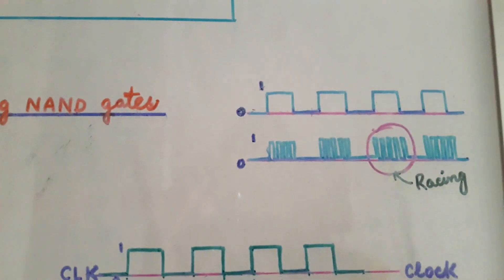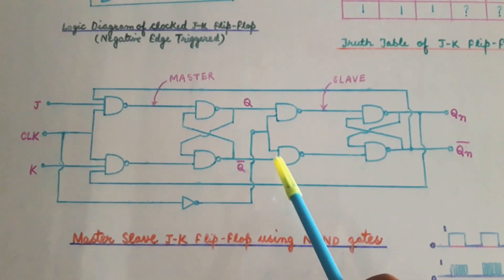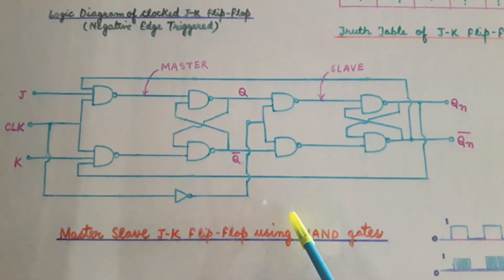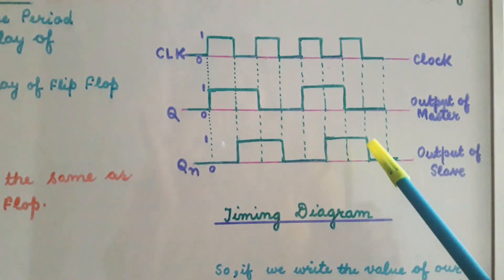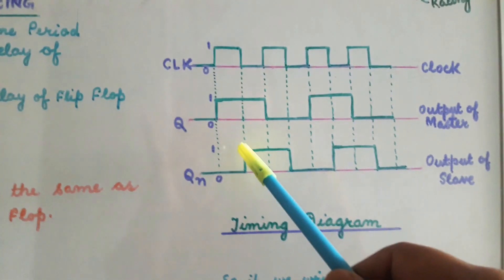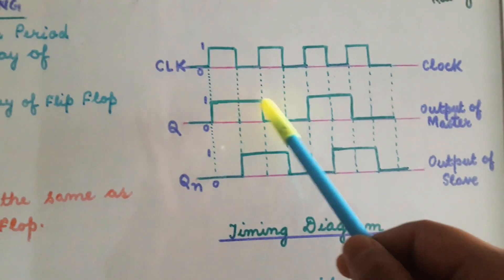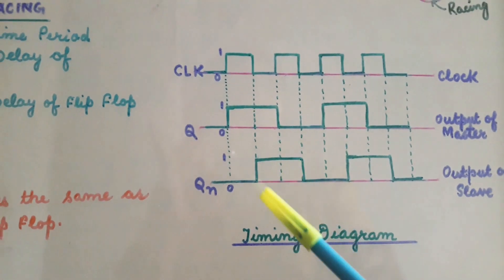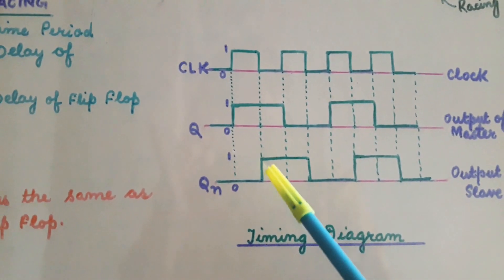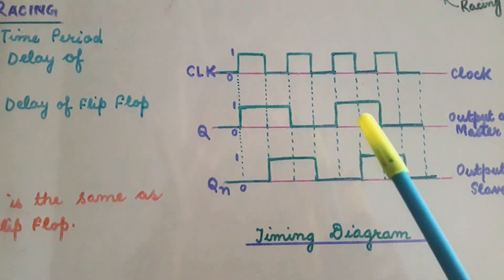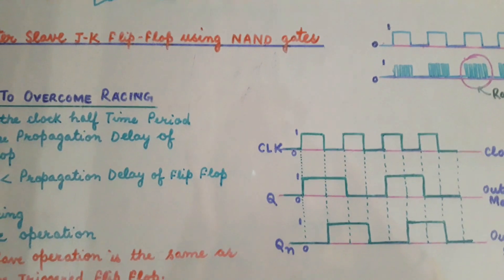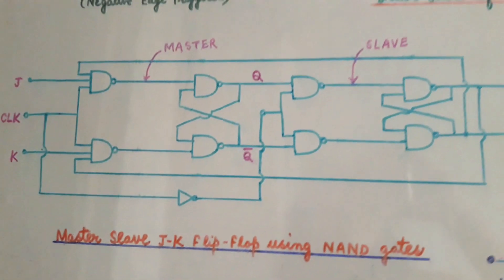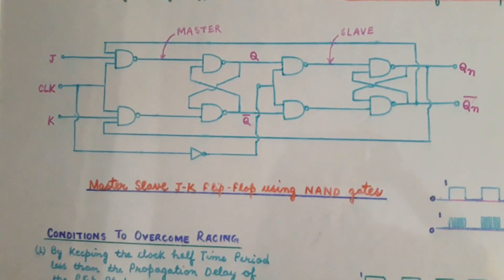This problem is what we call racing or the race-around condition, and it is observed in JK flip-flop. In order to overcome this problem of racing we use master-slave JK flip-flop. In this case we have avoided the problem of racing and converted it into toggling — the output remains the same for one clock cycle rather than changing continuously. I hope you understand the operation of master-slave JK flip-flop. That is all for this presentation.